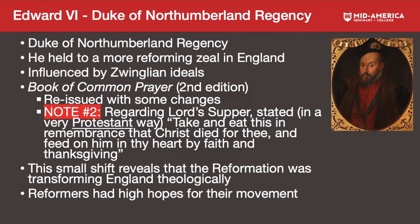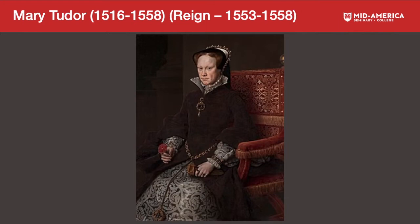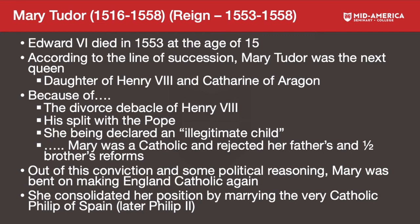The reformers had high hopes for their movement, but unfortunately Edward the Sixth died as a boy. Mary Tudor, who lived 1516 to 1558 with a reign from 1553 to 1558, came onto the throne, and things turned completely opposite for the reformers. Edward the Sixth died in 1553 at the age of 15, and according to the line of succession, Mary Tudor was the next queen.